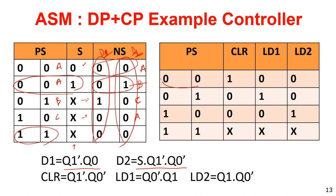From present state A: generating clear signal, load signals are 0,0. If in state B (load1 is generated), clear and LD2 are 0. For state C: load2 is generated. So clear = Q1'·Q0' (you are in state A), load1 = Q1·Q0' (state B), and load2 = Q1·Q0' — wait, state C gives Q1·Q0 pattern. It is simple basic FSM implementation.